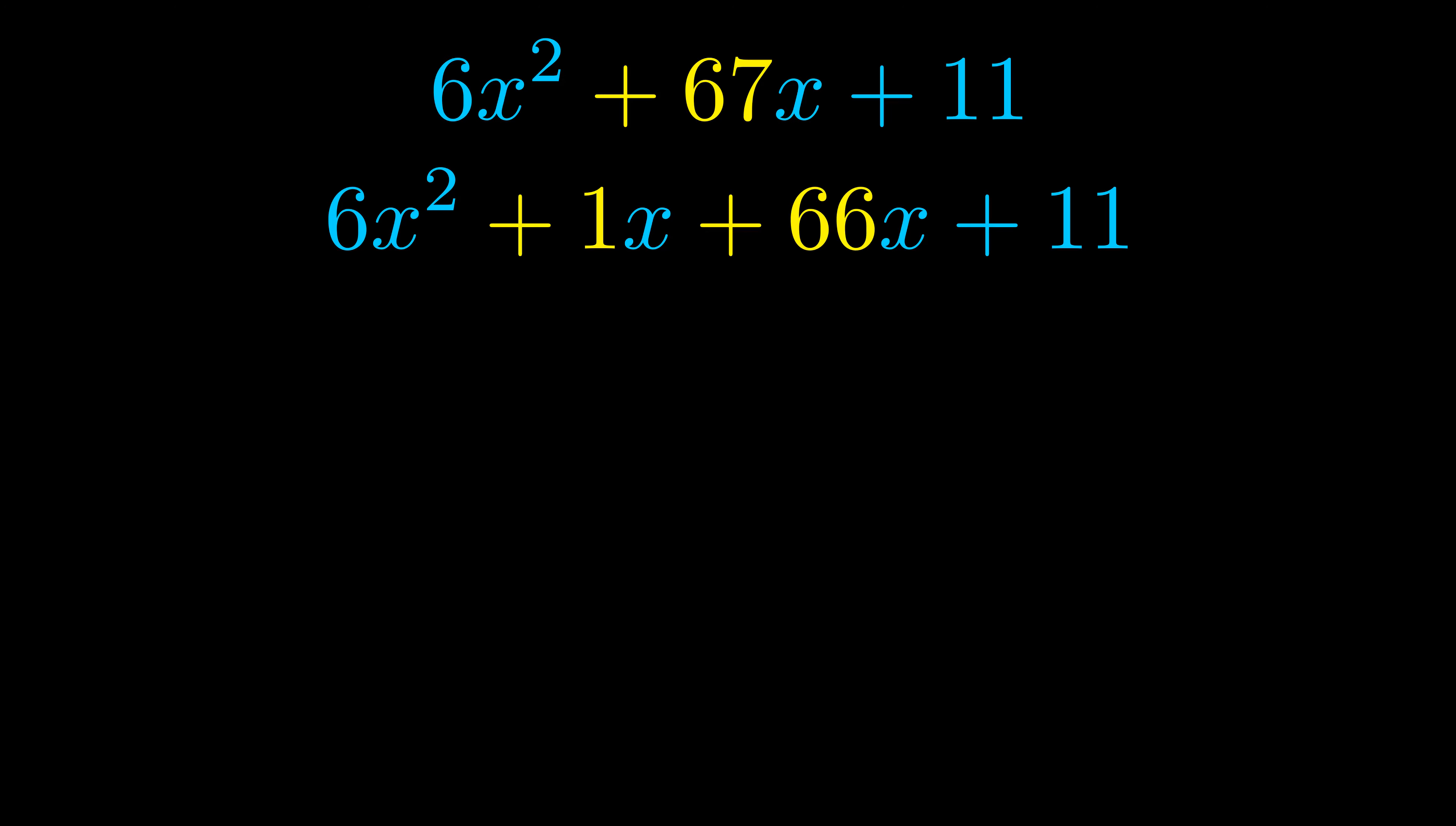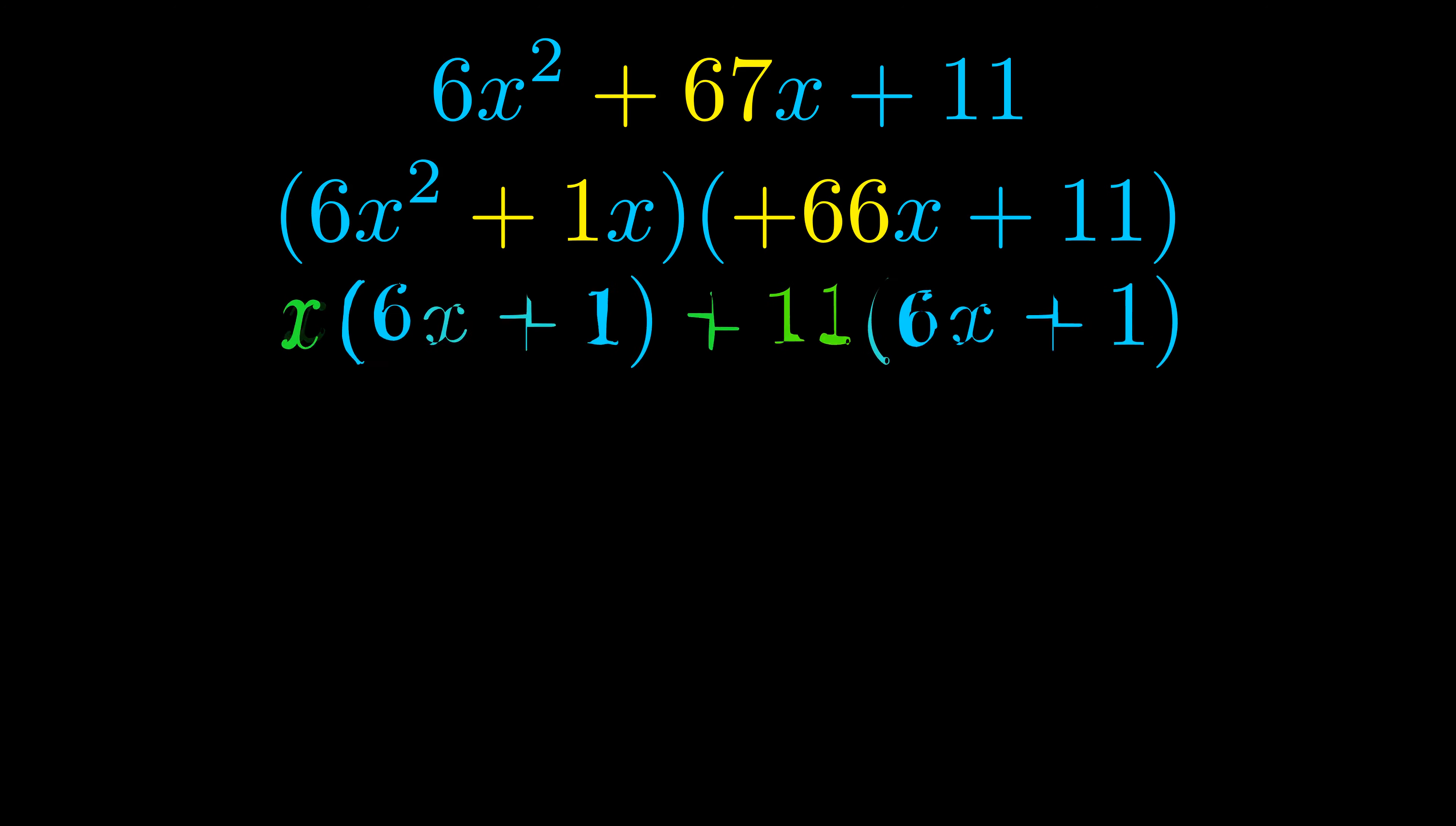Once we've done this, we put parentheses around the first term and the last term so that we can take the greatest common factor out of both terms. We can see the greatest common factor is now outside in green.